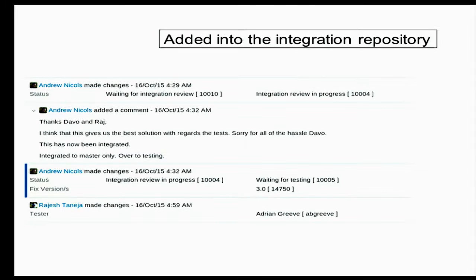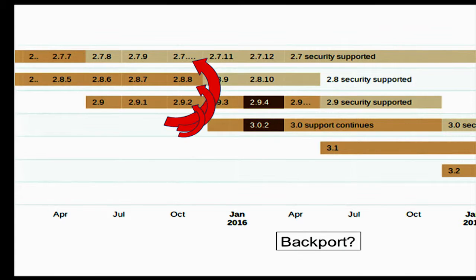If you're lucky, by the end of the week, once something is in integration, it then gets into the new developer version of Moodle from the following week. For things which are bug fixes, often you might want to backport it so that currently supported versions of Moodle, like 2.8 and 2.9, get the same fix. Or if it's a security fix, it will even go back to 2.7. If it's a new feature, then it will only appear in the next version — in this case, that was Moodle 3.